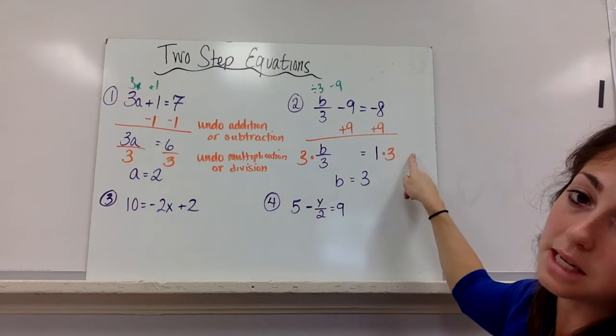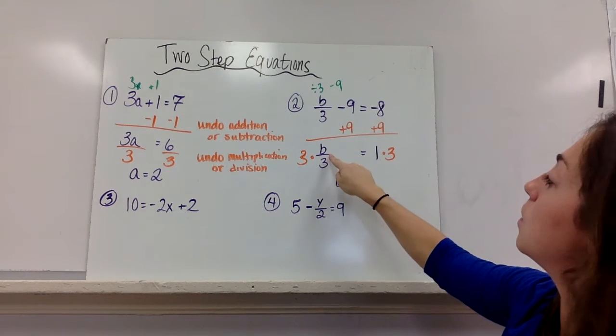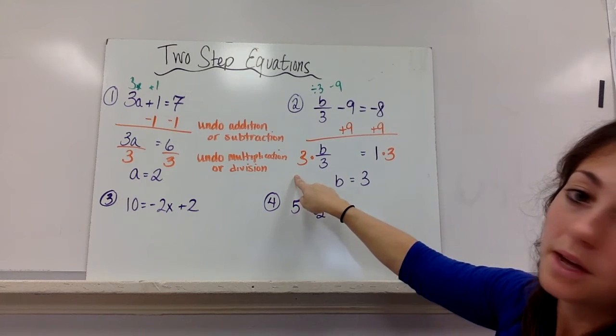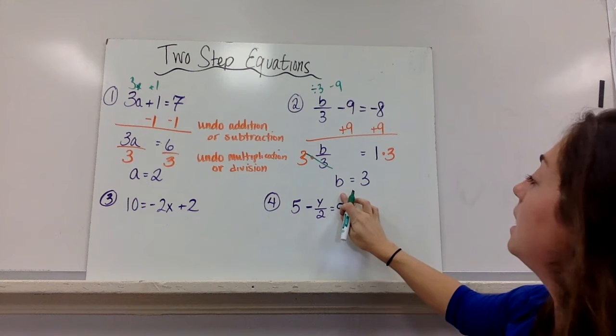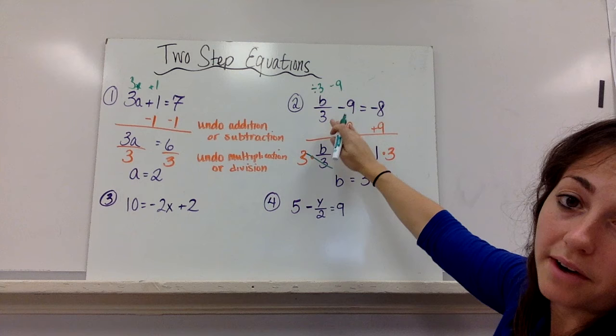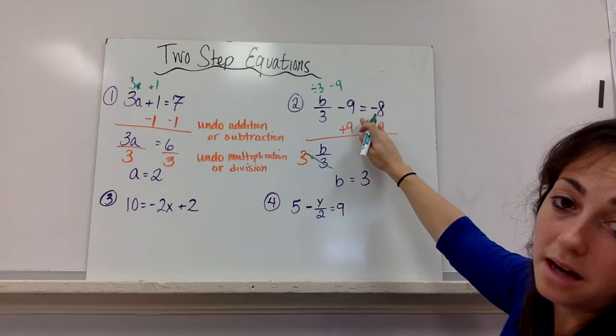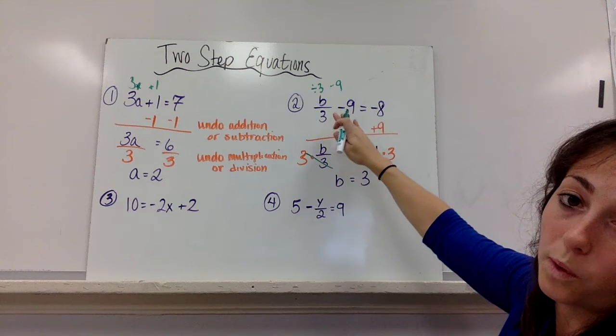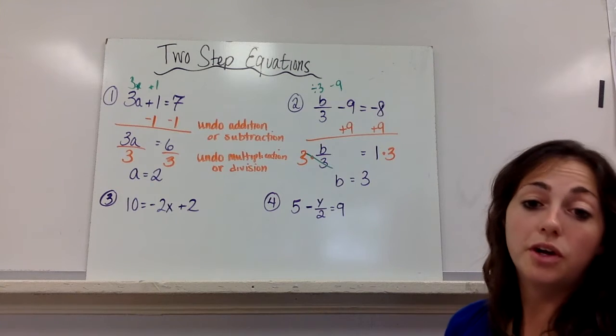Then I multiply both sides of the equation by 3, because to undo division, I multiply. And then I have b equals 3. If I plug that in, 3 divided by 3 minus 9—3 divided by 3 is 1, and 1 minus 9 is negative 8. Good.